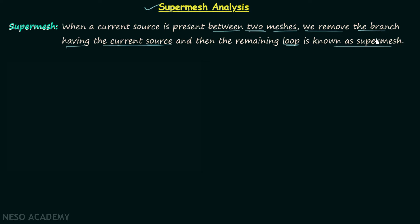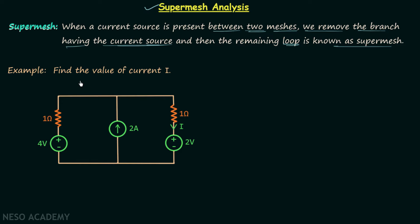This is pretty straightforward, and you will understand it in a much better way after solving one example problem. In this example we need to find the value of current I. In step number one we identify the total number of meshes present in the network, and in this network we have two meshes.